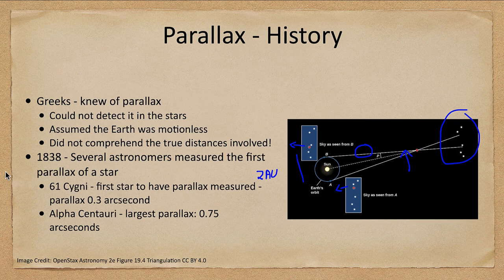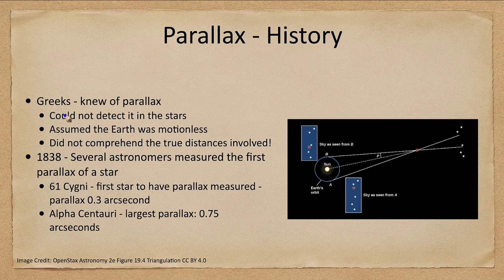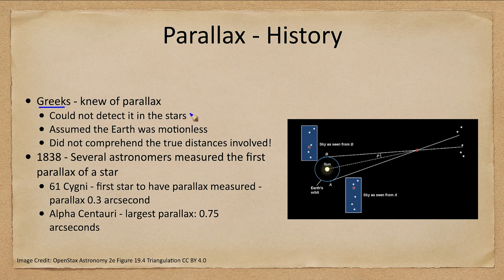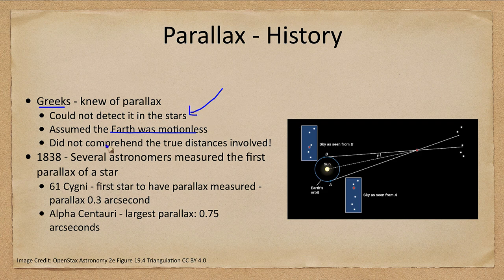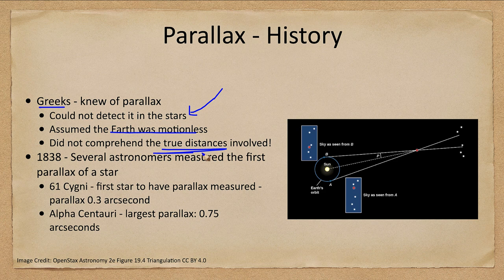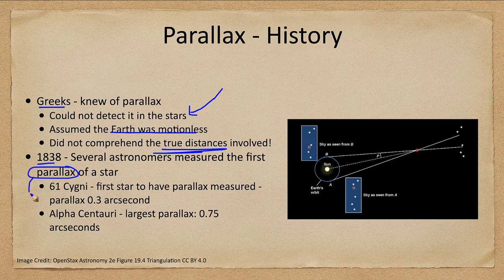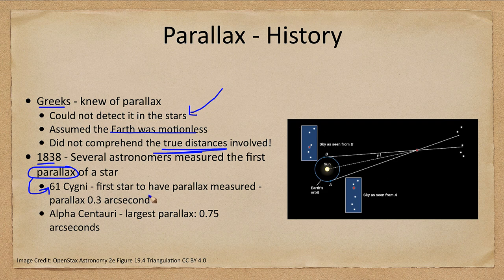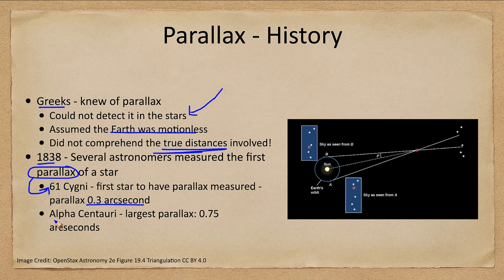Now the parallax has been known for a long time. The Greeks knew of parallax. In fact, that's one of the reasons they assumed Earth was not moving, because they could not detect a parallax in the stars. The problem was they did not comprehend the true distances involved. In 1838, several astronomers measured the first parallax of a star, 61 Cygni. That was the first star to have its parallax measured at 0.3 arc seconds. Alpha Centauri has the largest parallax, being the nearest star at 0.75 arc seconds.